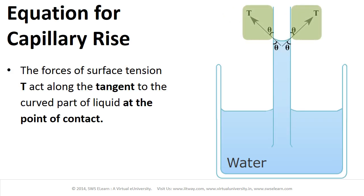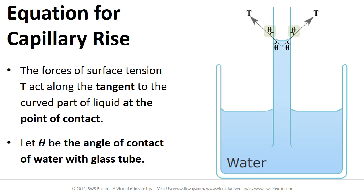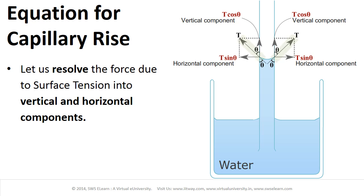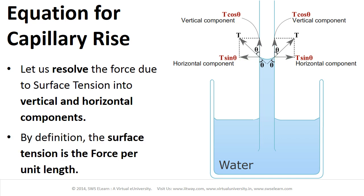The forces of surface tension T act along the tangent to the curved part of the liquid at the point of contact. Let theta be the angle of contact of water with the glass tube. Let us resolve the force due to surface tension into vertical and horizontal components. By definition, the surface tension is the force per unit length.